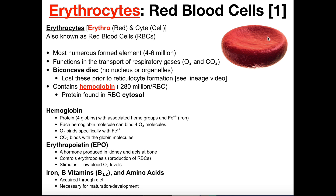By shape, red blood cells are biconcave discs. You can see one of these concavities on the top surface of the red blood cell, and if you flip it over, there's another concavity on the bottom. So as you move toward the center from either the top or bottom, it caves in — that's what biconcave means — giving it a disc shape overall.